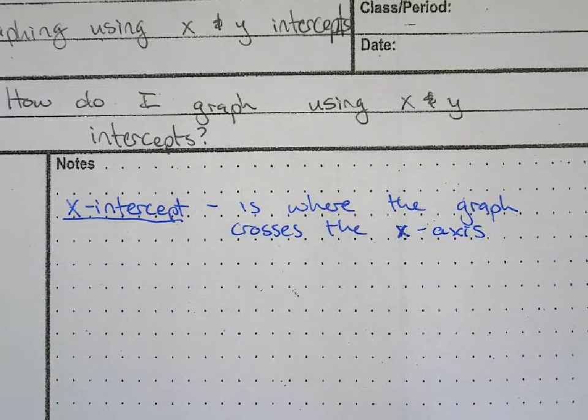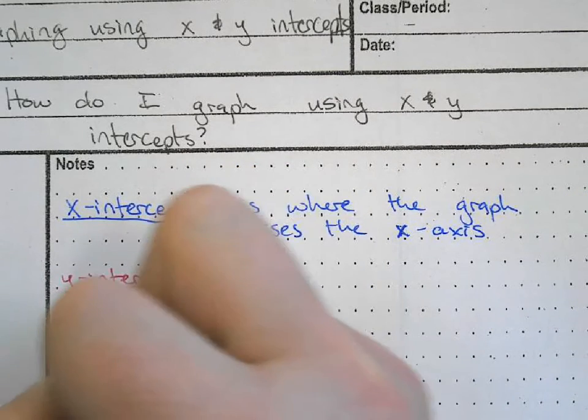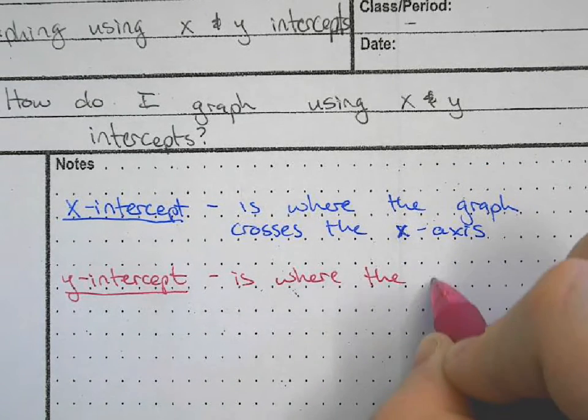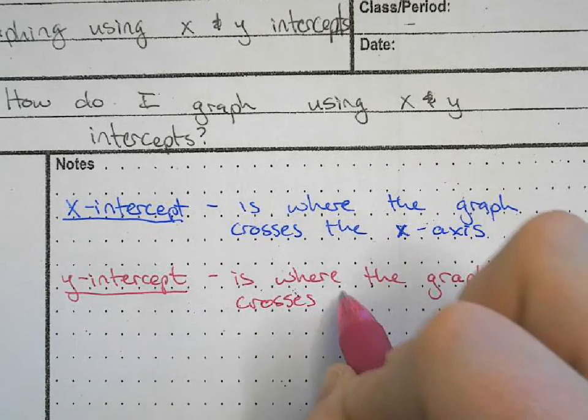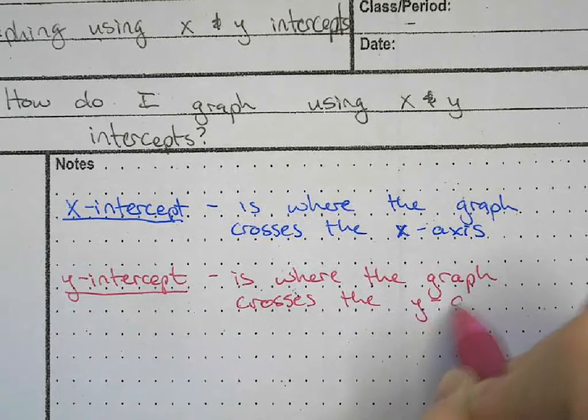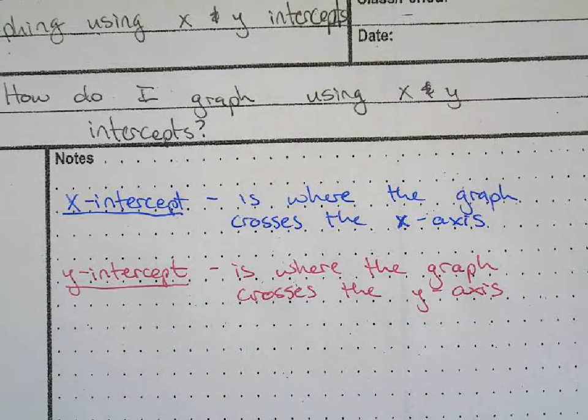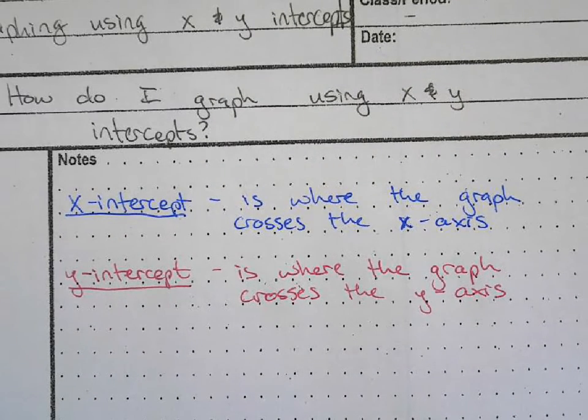The y-intercept is where the graph crosses the y-axis. X-intercept we're crossing the x-axis, y-intercept we're crossing the y-axis.